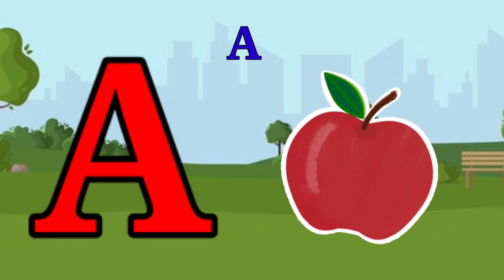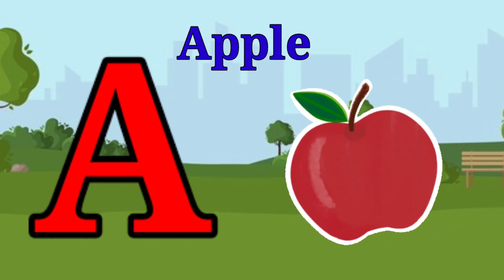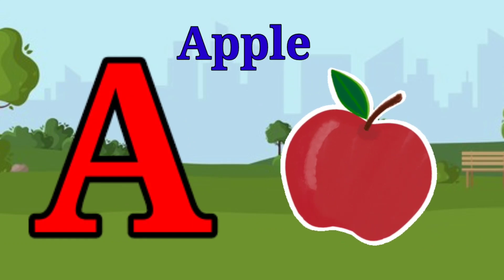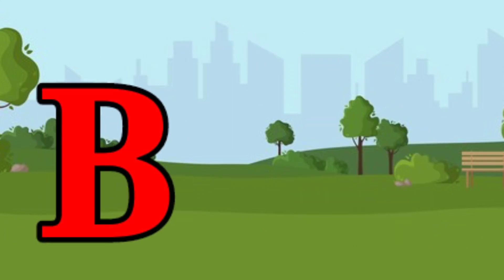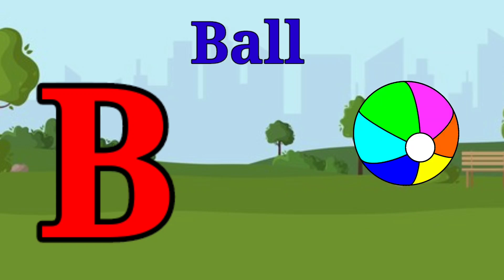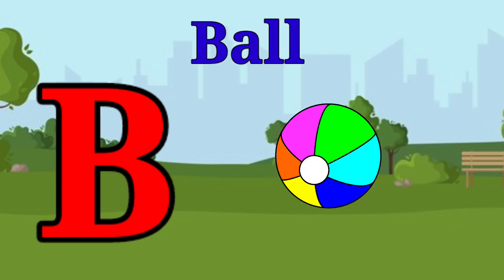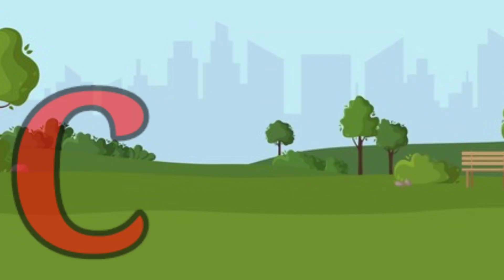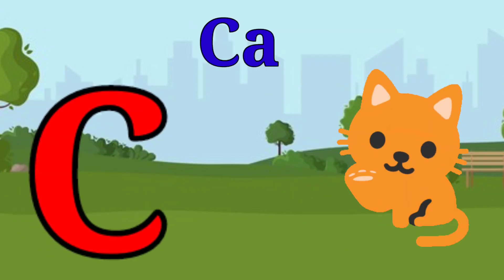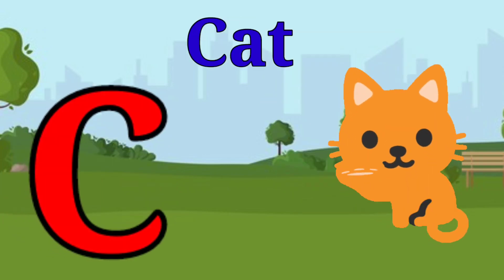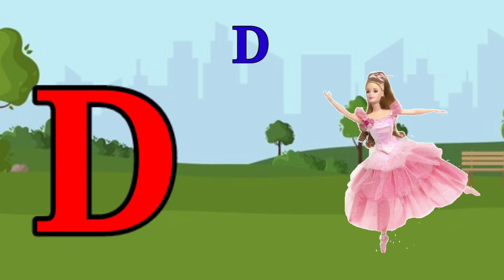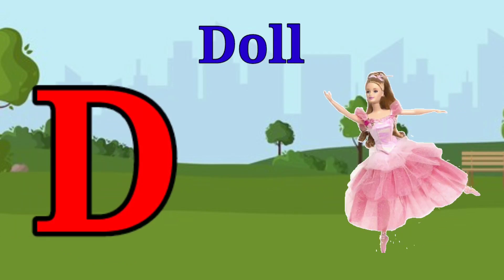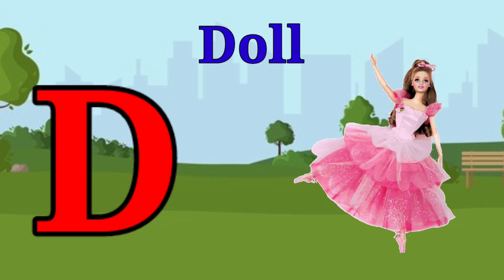A is for apple, a-a-apple. B is for ball, b-b-ball. C is for cat, c-c-cat. D is for doll, d-d-doll.